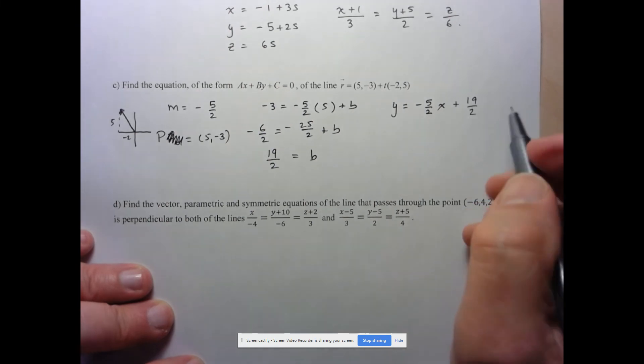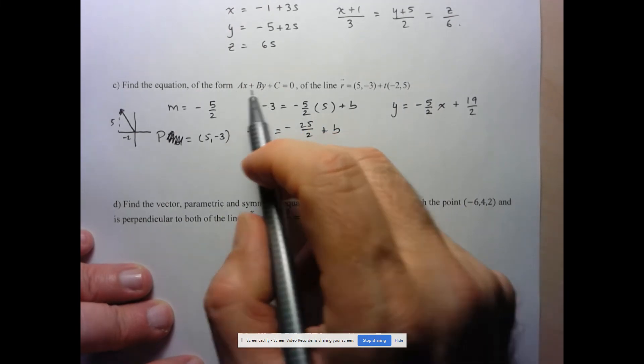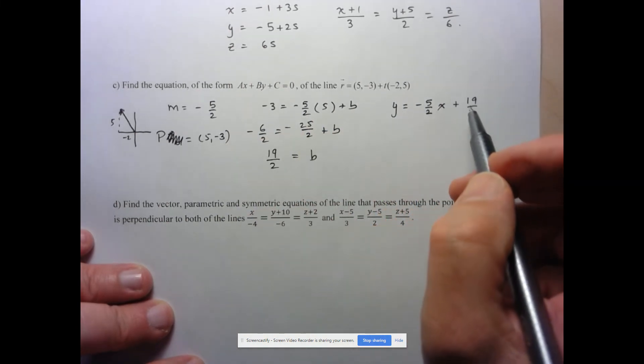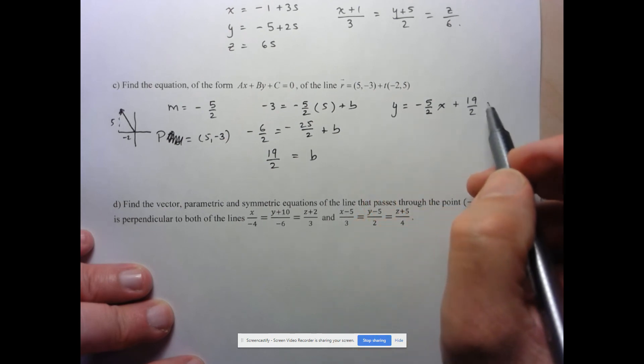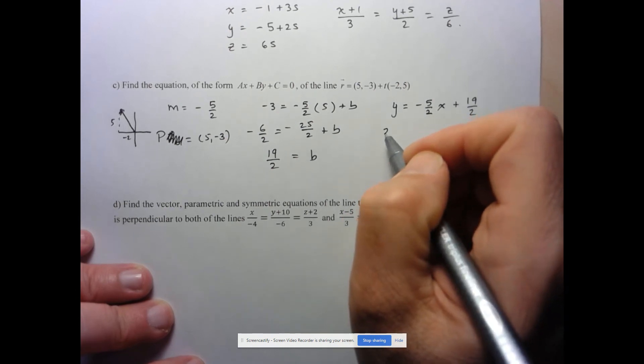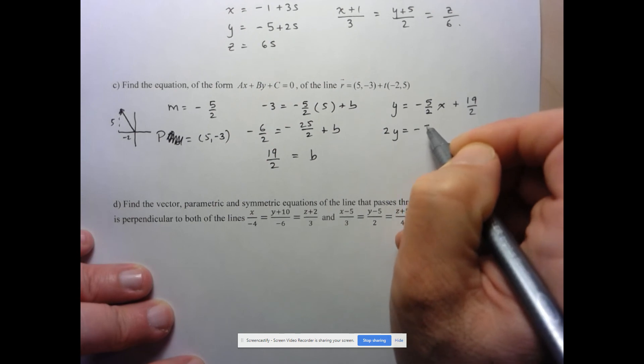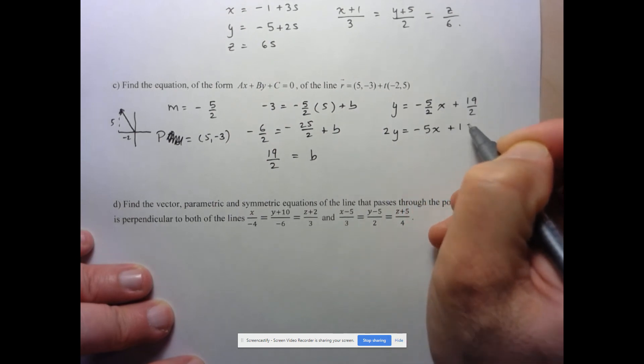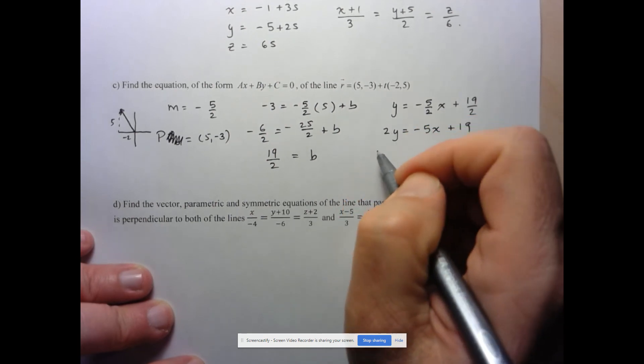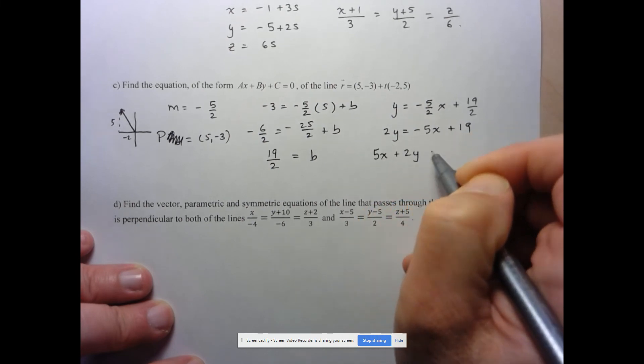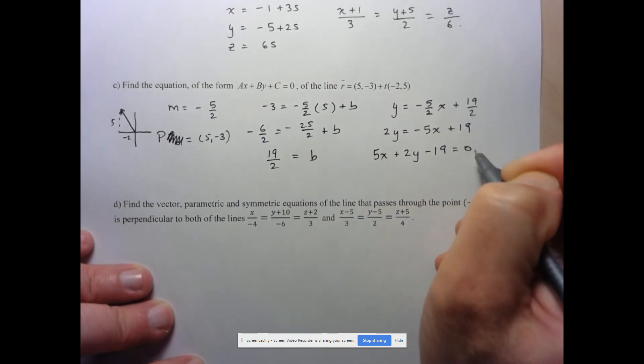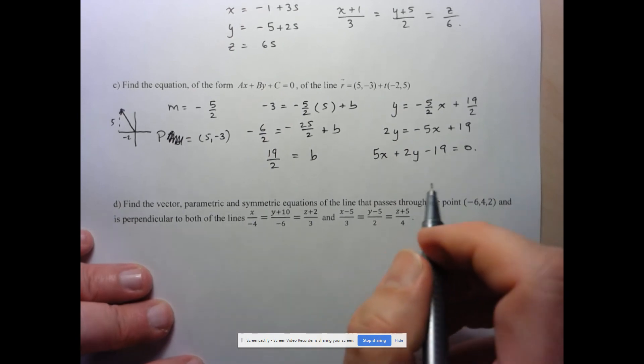All right. But, of course, when we want it in standard form, we'd prefer having all integers. So I'm just going to multiply everything by 2 on both sides of the equation. So I have 2Y equals negative 5X plus 19. Bring everything to the other side. So 5X plus 2Y minus 19 equals 0. And there you have it.